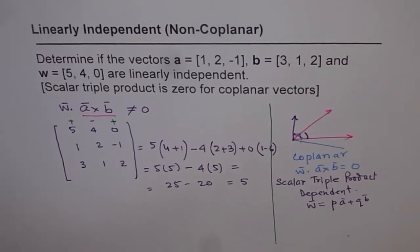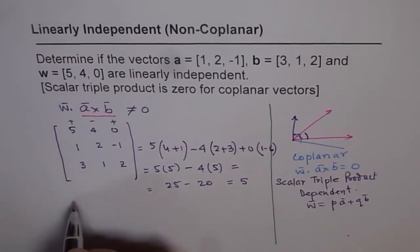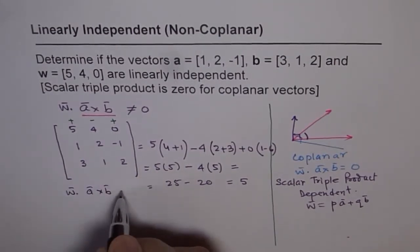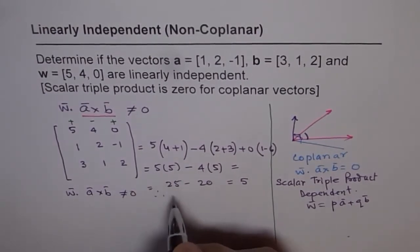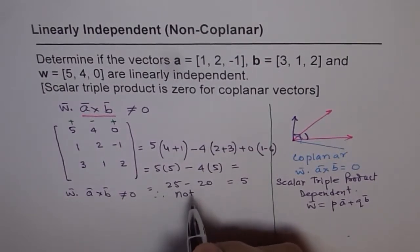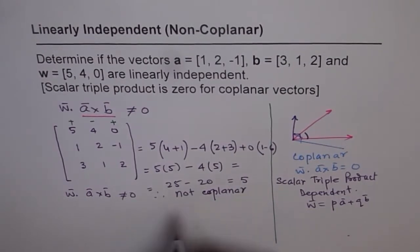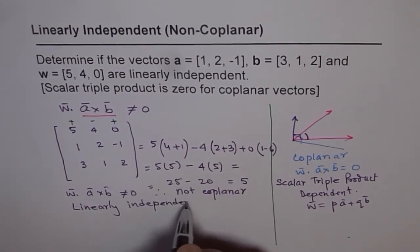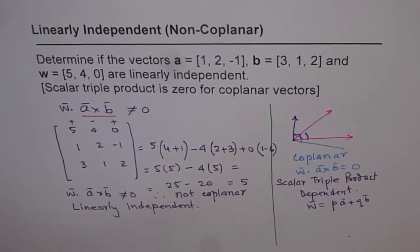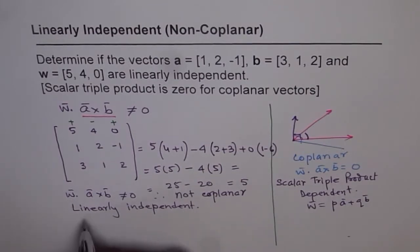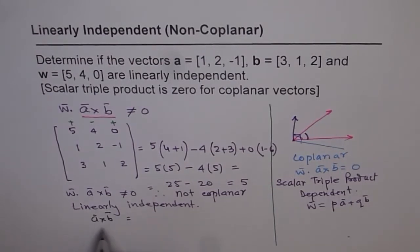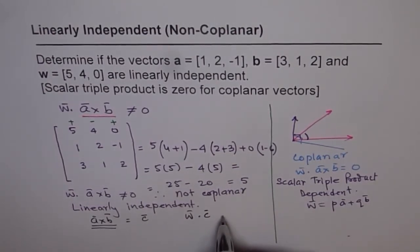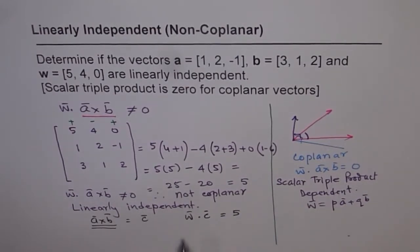Since the scalar triple product equals 5, which is not equal to 0, they are non-coplanar, and therefore linearly independent. For those less familiar with the matrix method, you can first find A cross B to get a vector C, then compute W dot C — you will get the same result of 5. Since it is not equal to 0, the vectors are linearly independent.